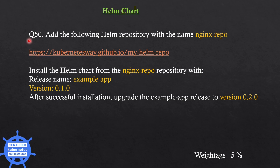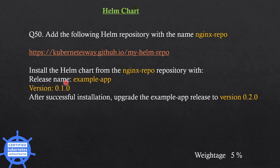The next question is related with Helm chart. The question is: add the following Helm repository with the name nginx-repo. The repository URL is kubernetes-way.github.io/myhelm-repo. Install the Helm chart from the nginx-repo repository with release name example-app. The version should be 0.1.0. After successful installation, upgrade the example-app release to version 2.0.